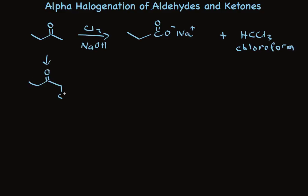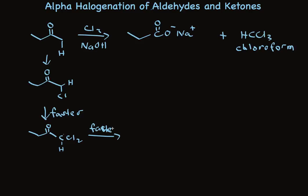Initial halogenation preferentially makes the chloromethyl ketone. Because halogen is electron-withdrawing, once we put a halogen on that alpha carbon, that alpha hydrogen is more acidic than before. So a second halogenation occurs that is faster than the first. Now we have two chlorines attached, but we still have an alpha hydrogen that's even more acidic. So even faster, we replace the third hydrogen. This reaction only occurs for methyl ketones. By the time we put three halogens on that carbon, that group becomes a good leaving group, and this product undergoes nucleophilic acyl substitution — it acts like a carboxylic acid derivative.